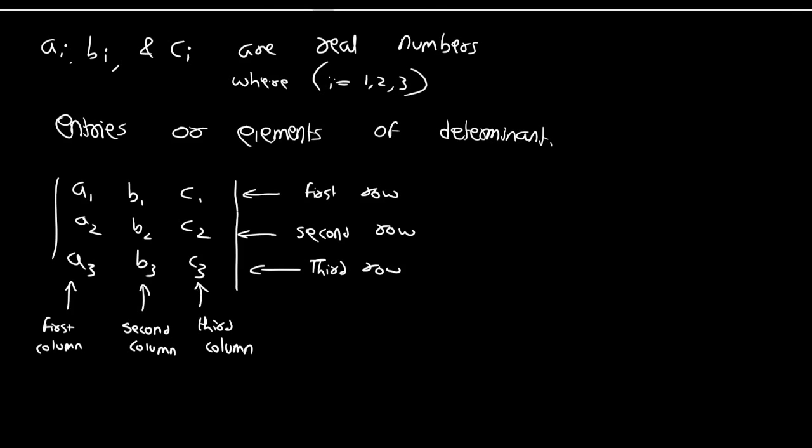So this is how we define a third order determinant with elements A1, B1, C1 — covering the first row, second row, third row, and first column, second column, and third column of the determinant.